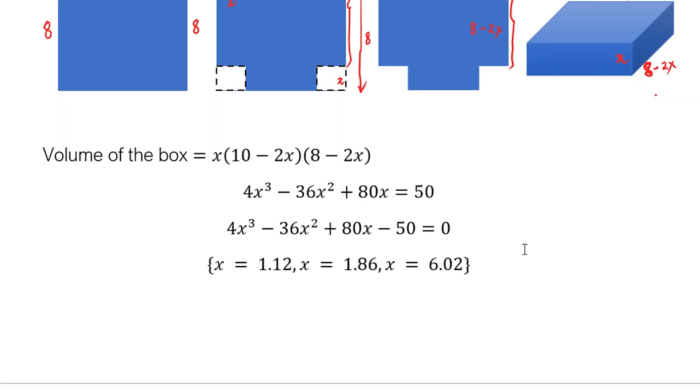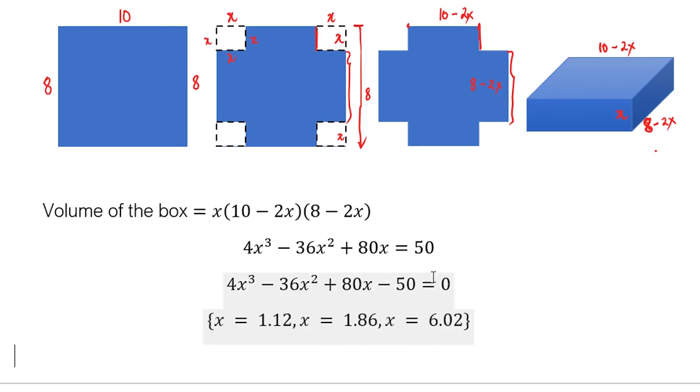Now, which of these are valid? So we were able to solve three. We have x equals 1.12, x equals 1.86, and x equals 6.02. But actually, one of them is not valid. Which one do you think is not valid? They're all positive, no? So they all seem to fit that category of being positive. But one of them is not valid.